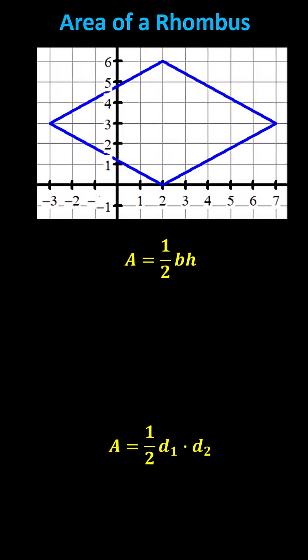We want to determine the area of the given rhombus. Recall a rhombus is a parallelogram where all four sides have the same length. We can also define a rhombus as a quadrilateral with four equal sides and opposite sides are parallel.